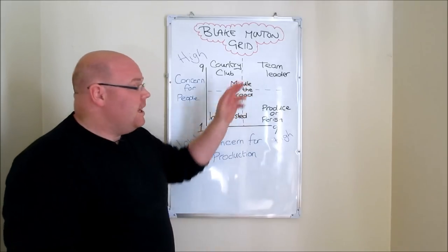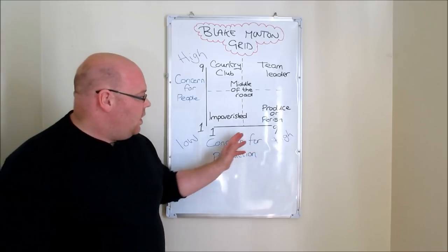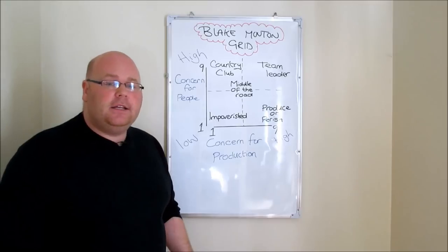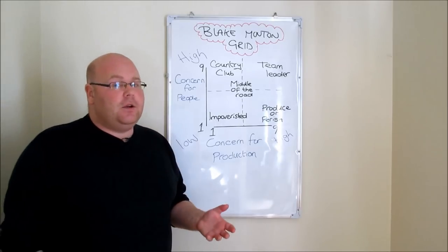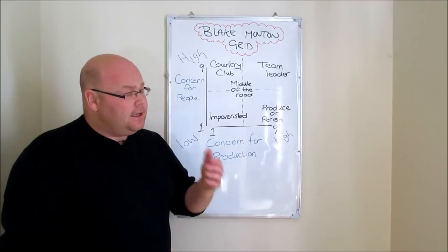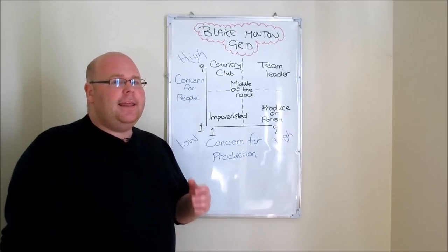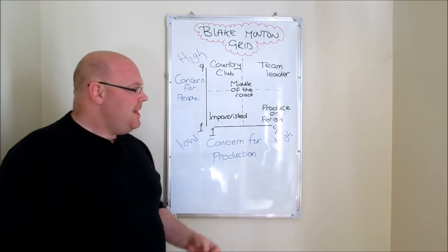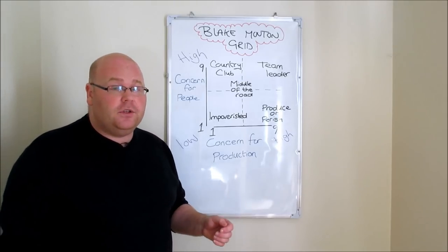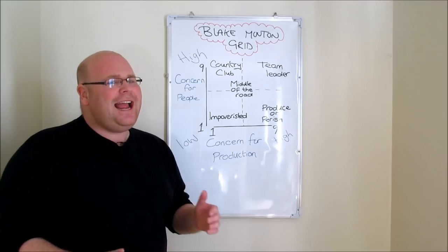Where you do maximize the benefits of both approaches is with the final style: the team leader approach. Looking at the axes, with the team leader approach we have a very high concern for production matched by an equally high concern for people. According to Blake and Mouton, this is clearly the most desirable management style. However, there are a couple of problems — high concern for both production and people can be very difficult to achieve, and there may be situations in a business where actually a high concern for one or the other is not desirable at that time.